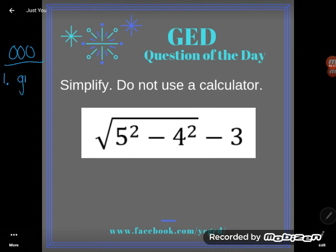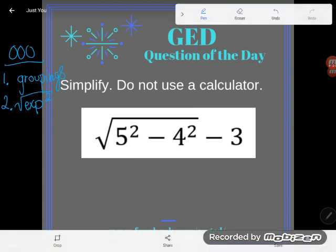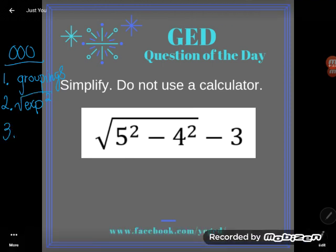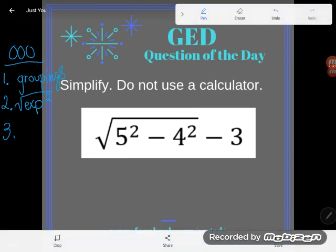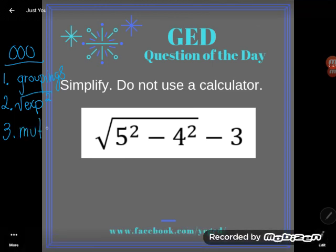So our first step will be to tackle any groupings and then after that you're going to want to cover any exponents and remember that exponents include both the floating numbers and their inverses, so the powers and the radicals. And then after that we're going to do multiplication and its inverse, that's division. And then finally our fourth and final step will be to do any addition and subtraction.